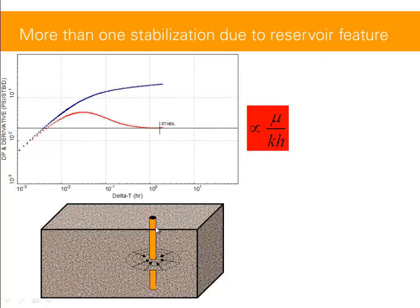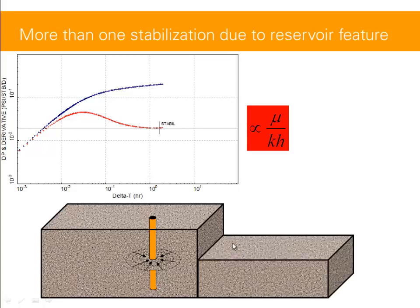This is a simple case: a vertical well with circular flow towards the well — that's the radial flow regime. You've got a stabilization in your derivative, and the stabilization level is inversely proportional to KH. But let's assume that further away from the well you've got a reduction in net thickness. So you are further away from the well, large delta T, and now your KH is getting reduced. If your KH is getting reduced, this number is getting higher and you might expect a higher stabilization.